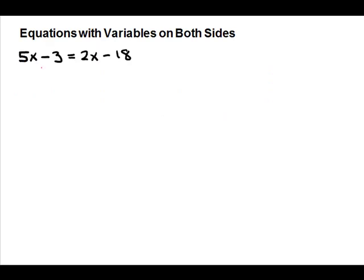Here's another example of an equation with variables on both sides. We have 5x on the left and 2x on the right. First we should get rid of one of those variable terms. I'm going to choose to get rid of the 2x. It's a positive 2x, so to get rid of it I will need to subtract it from both sides.